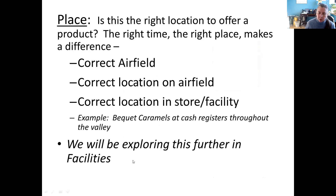And place — we'll come back to this when we go into facilities. As they say, location, location, location. Do you need to be on an airfield? What type of airfield is the right one? In metropolitan areas you can have hundreds to choose from. Are you in the correct location on the airfield? Do you want to be near the commercial airport facility or away from it? Do you want to be on a road that's easily accessible? And in a bigger building, are you in the correct location in the facility? An example going back to Bacay Caramels — they were the first ones in the valley to put items right at the cash register, not out on the rack, and they built their business that way.